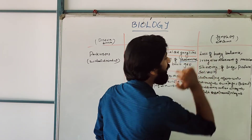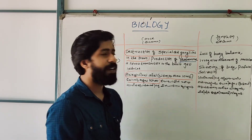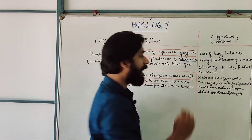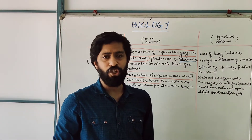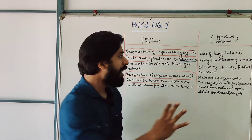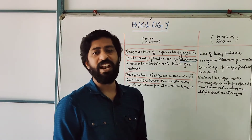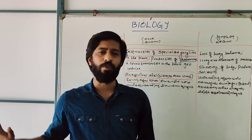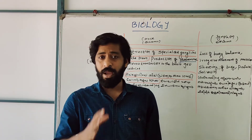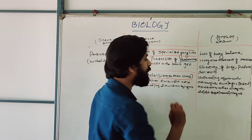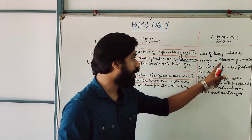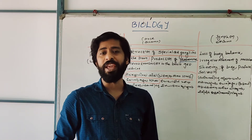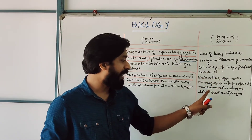What are the symptoms of Parkinson's disease? The first symptom is loss of body balance. Irregular movements of muscles — uncontrollable muscle movement. Its loss of body balance will strain the body.